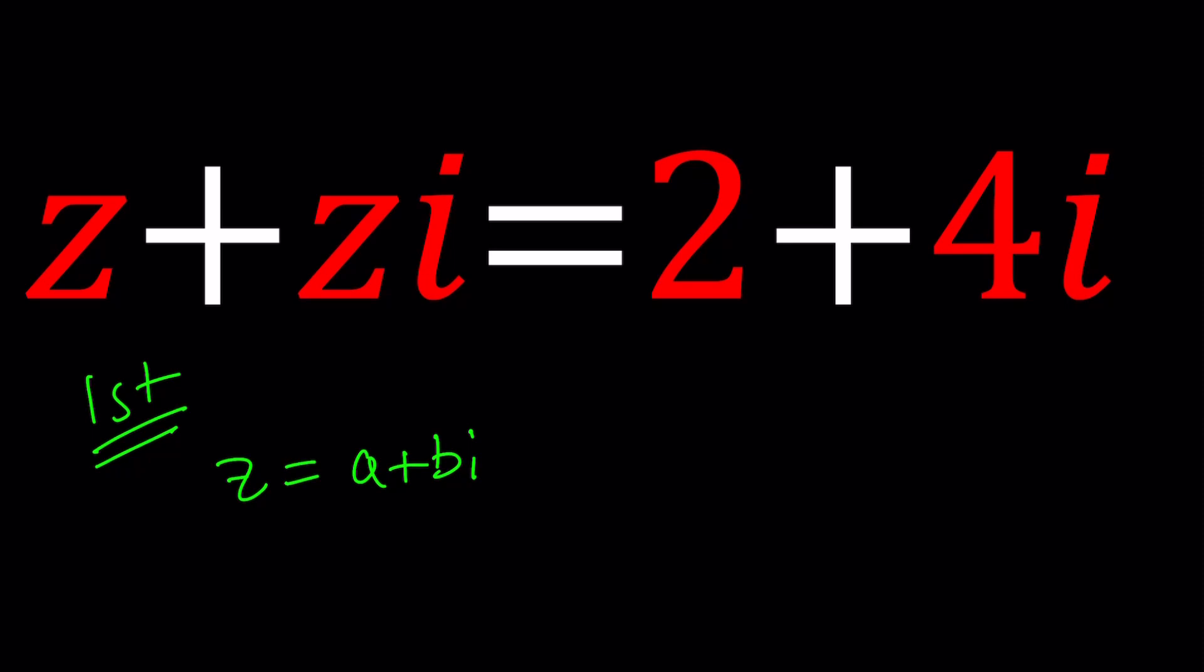Remember, a plus bi is important. It's also the name of the channel. Because z is a complex number and we can write it in standard form. Now how does this help? By replacing z with a plus bi, we can solve for a and b, which make up z.